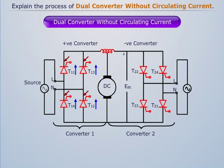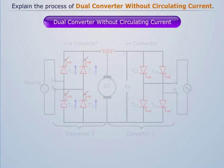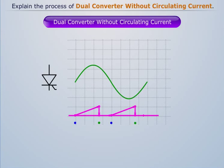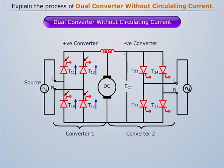In a dual converter without circulating current operating mode, the flow of circulating current is completely inhibited through automatic control of the firing pulses. So that only that converter which carries the load current is in conduction and the other converter is temporarily blocked.